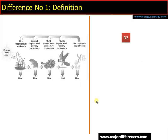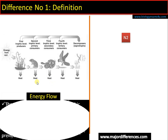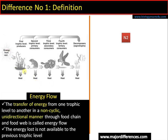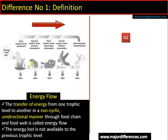Starting with the definition of energy flow: energy flow is a transfer of food energy from one trophic level to another in a non-cyclic, unidirectional manner through a food chain or food web. The energy from sunlight is trapped by producers, then transferred to different consumers, ultimately reaching decomposers. This movement is unidirectional because energy that is lost is not available to organisms in the previous trophic level — it is lost forever.